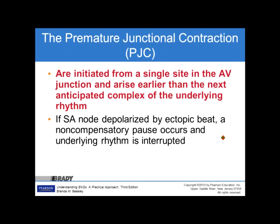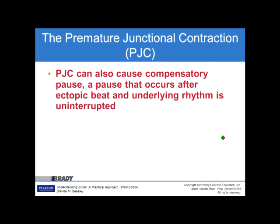Premature junctional contractions, or PJCs, are initiated from a single site in the AV junction and arise earlier than the next anticipated complex of the underlying rhythm. If SA node depolarization is reset by an ectopic beat, a non-compensatory pause occurs and the underlying rhythm is interrupted. A PJC can also cause a compensatory pause, where the underlying rhythm is uninterrupted.